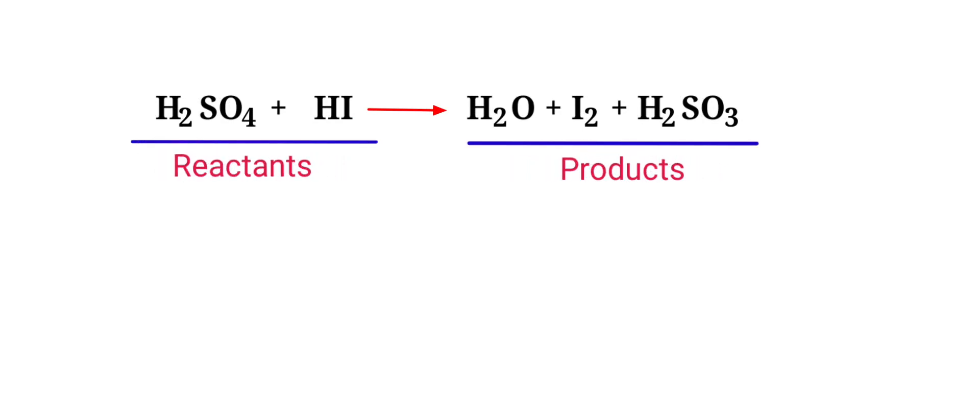In this equation, the reactants are sulfuric acid and hydrogen iodide, and the products are water, iodine, and sulfurous acid.